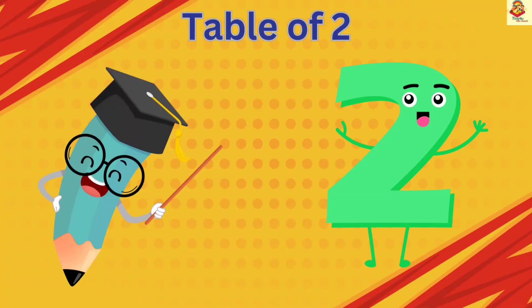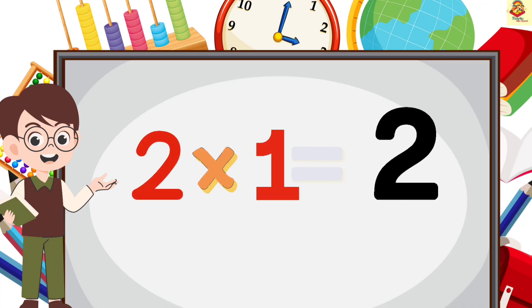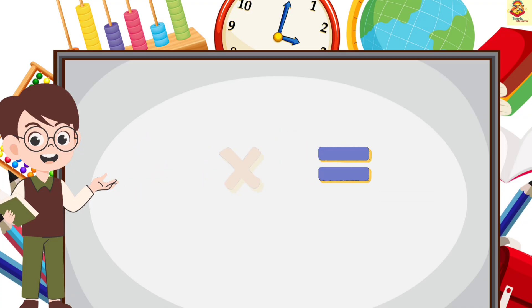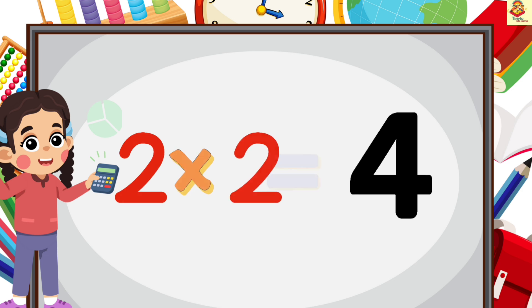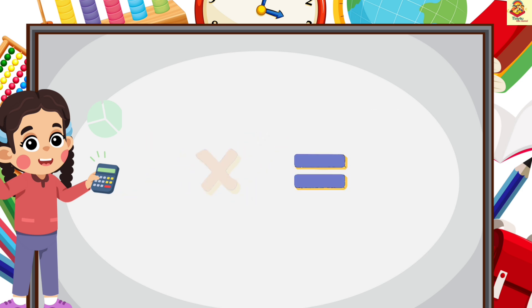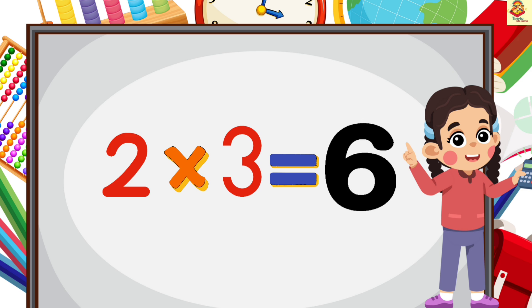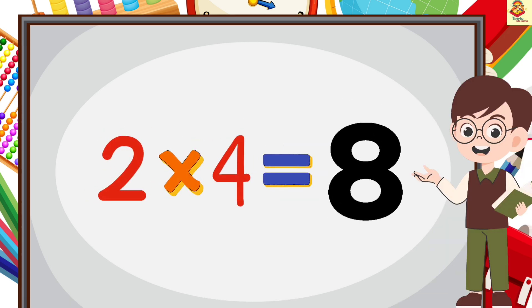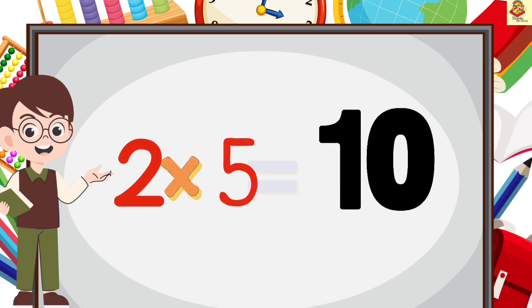Table of 2. 2 1's are 2, 2 2's are 4, 2 3's are 6, 2 4's are 8, 2 5's are 10.